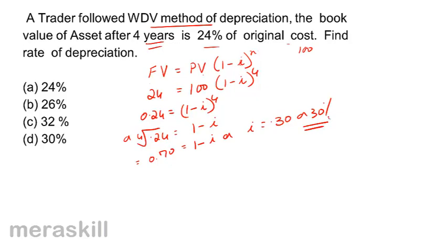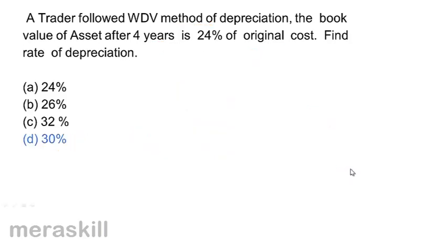Alternatively, we could try all the given options and check which value gives 24% of the original cost after 4 years when the present value is 100. The correct answer here is D, 30%.